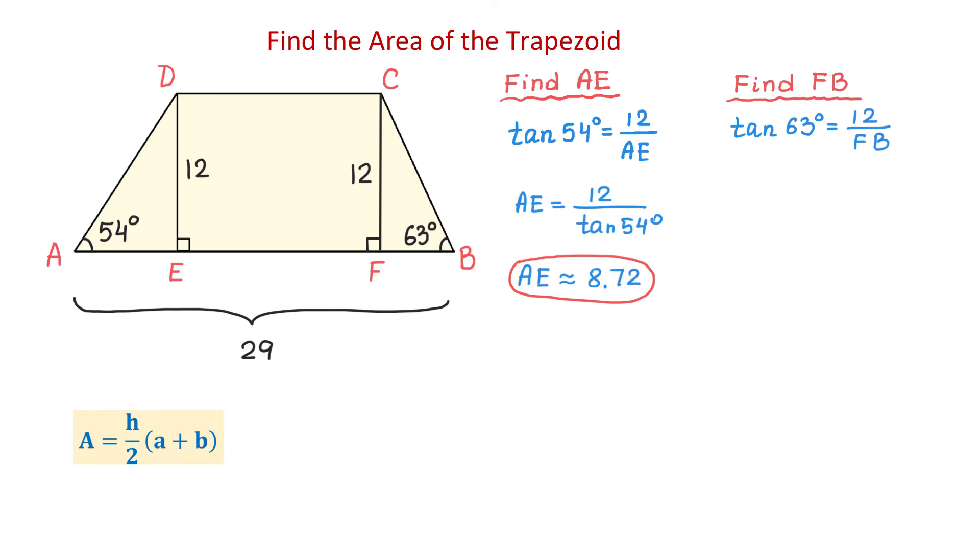Then, F, B equals 12 divided by the tangent of 63 degrees. Then, again, we will use the calculator, and we will get that F, B is approximately 6.11 units.